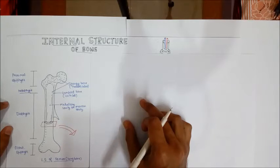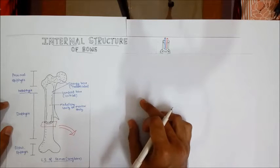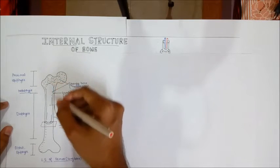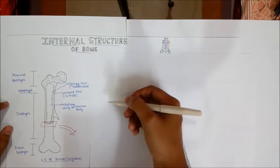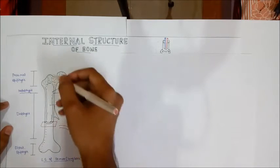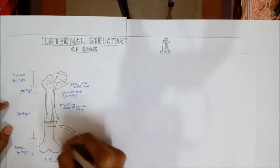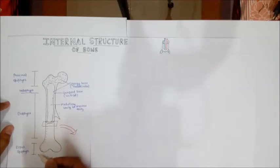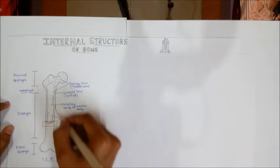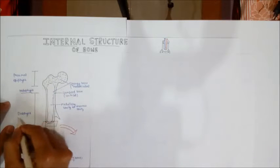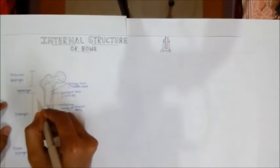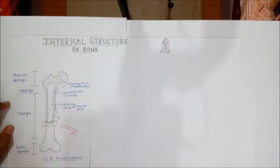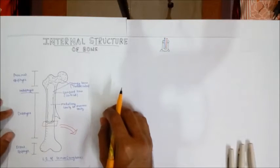Here we have taken the longitudinal section of the long bone. Any long bone has distinct regions. The ends of the long bones are called epiphysis — the upper one is the proximal epiphysis and the lower one is the distal epiphysis. The central part or shaft of the bone is called the diaphysis. The region connecting the diaphysis with the epiphysis is called the metaphysis.